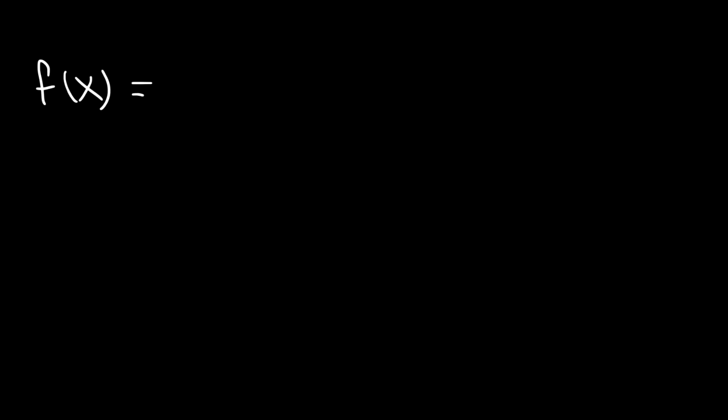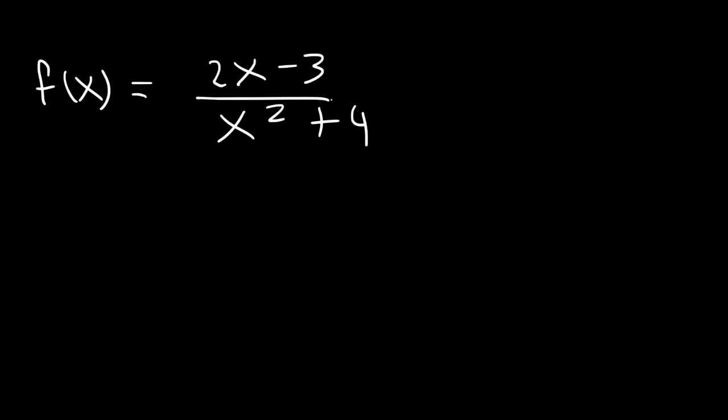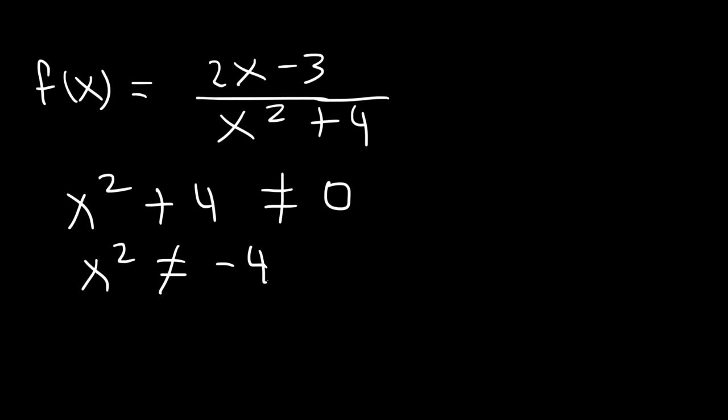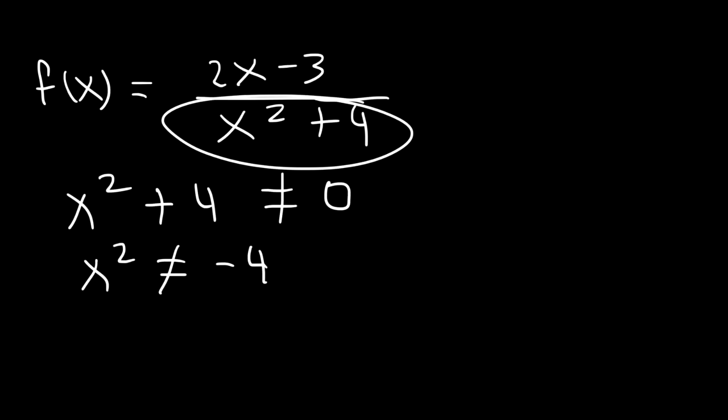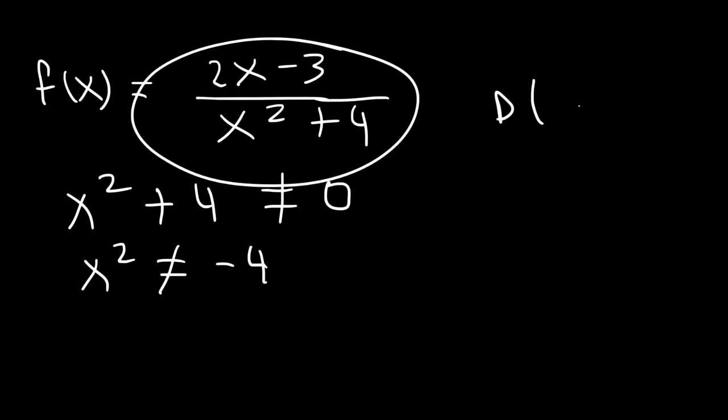Now what about this example: 2x minus 3 divided by x squared plus 4? Go ahead and find the domain. Let's set x squared plus 4 not equal to 0. If we subtract 4 from both sides, x squared cannot equal negative 4. Now this will never happen — whenever you square a number you get a positive number, not a negative. For example, 3 times 3 is 9, and negative 3 times negative 3 is positive 9. So x squared will never equal negative 4. Regardless of what x value you choose, the denominator will never be 0. So for this rational function, the domain is all real numbers — from negative infinity to positive infinity.